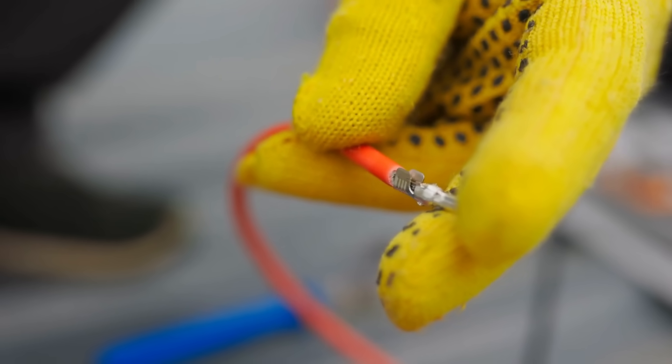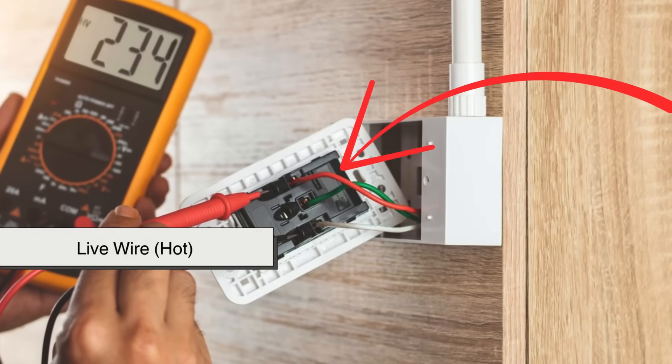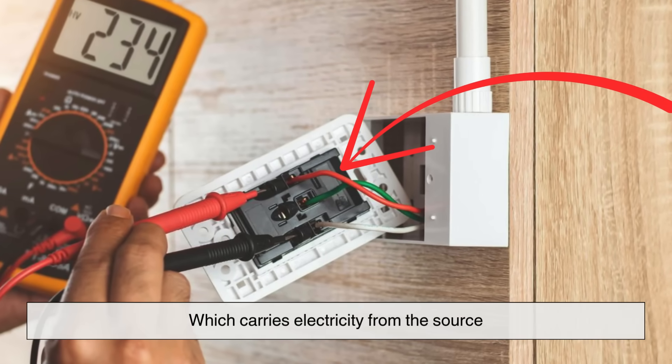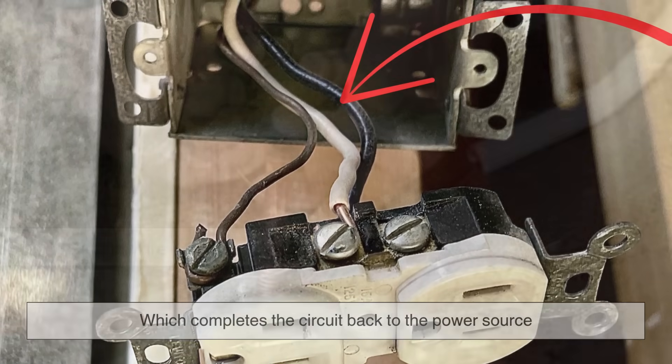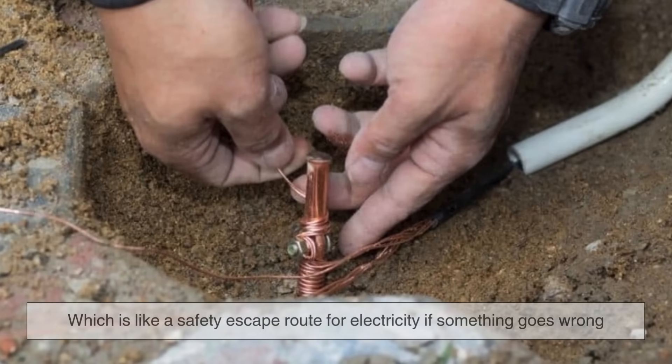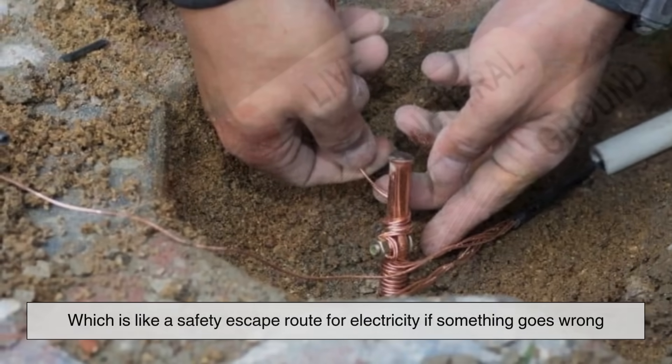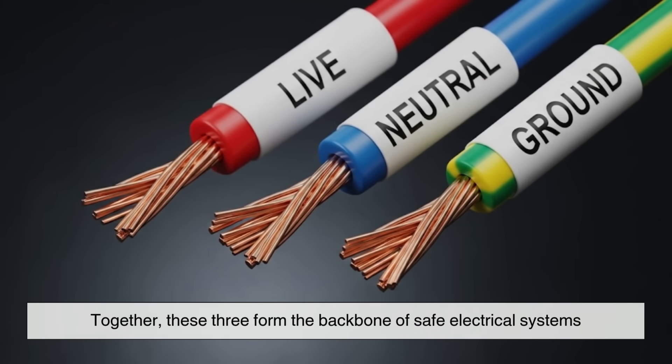If you peel back the layers, you'll typically find a few main components. There's the live wire, sometimes called hot, which carries electricity from the source. There's the neutral wire, which completes the circuit back to the power source. And there's the ground wire, which is like a safety escape route for electricity if something goes wrong. Together, these three form the backbone of safe electrical systems.